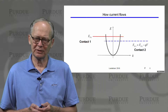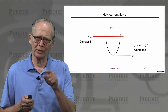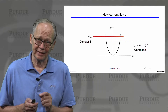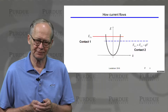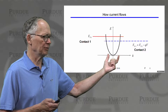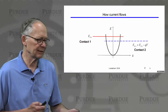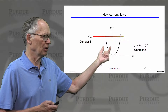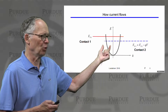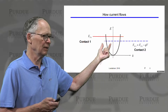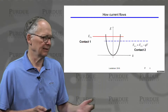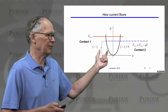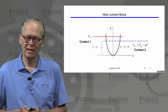We discussed the physical picture for understanding the Fermi window, F1 minus F2, and why it must be non-zero for current to flow. Consider a small chunk of semiconductor between two contacts with Fermi levels EF1 and EF2. Well below the Fermi energy, all states are filled for both contacts, so F1 equals F2, the difference is zero, and they contribute nothing to current flow.